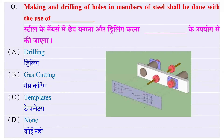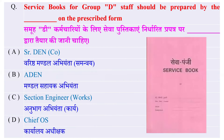Making a drilling of hole in members of a steel shall be done with — steel के members में छेद बनाना और drilling करना, इसके उपयोग से किया जाएगा? Options: Drilling के द्वारा, Gas Cutting के द्वारा, Templates के द्वारा, या इनमें से कोई नहीं — और सबसे सही जवाब है Templates के सही उपयोग से।